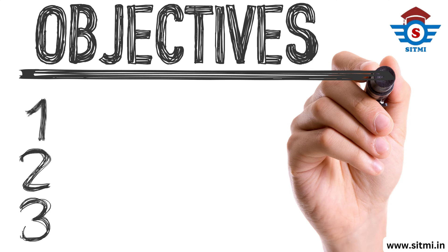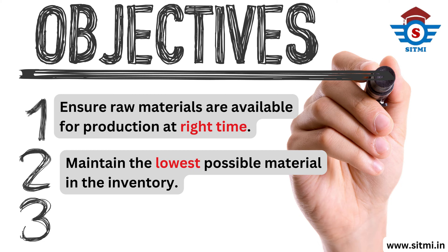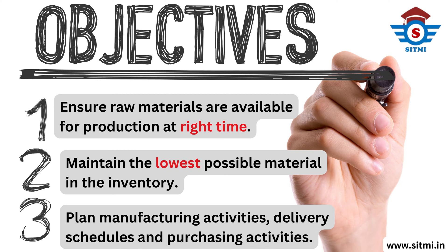Now what are the objectives of MRP? There are basically three major objectives. The first is to ensure raw materials are available for production at the right time. The second is to maintain the lowest possible material in inventory, because we have to plan scientifically only about required demand — not in excess and not in shortage. The third objective is to plan for manufacturing activities, delivery schedules, and purchasing activities.